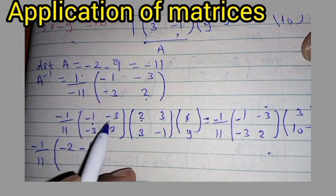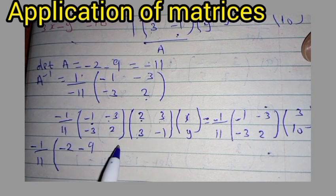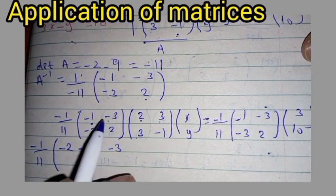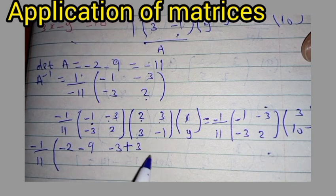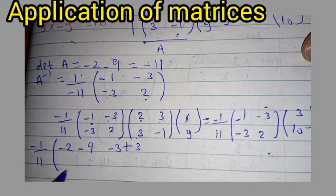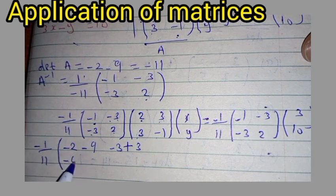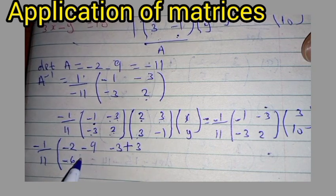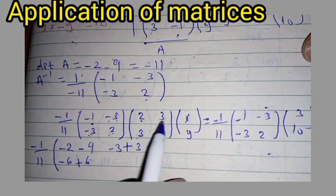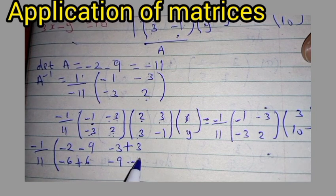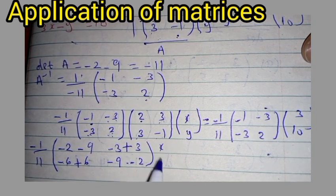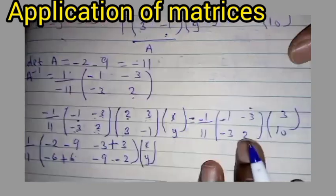To get the second element, it is the first row times the second column: negative 1 times 3 gives negative 3, then negative 3 times negative 1 gives positive 3. Then for the second row times first column: negative 3 times 2 gives negative 6, then 2 times 3 gives 6. Then negative 3 times 3 gives negative 9, and 2 times negative 1 gives negative 2. That gives us the matrix [x, y].